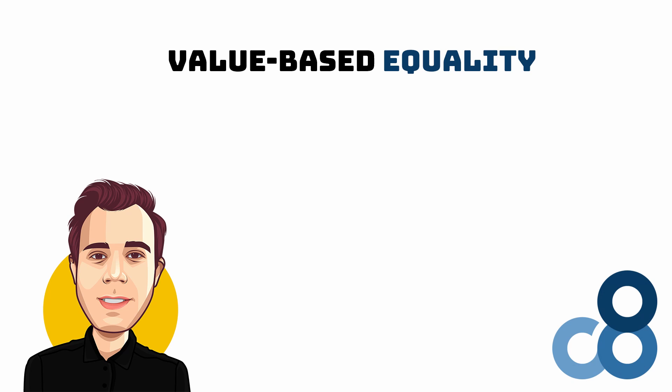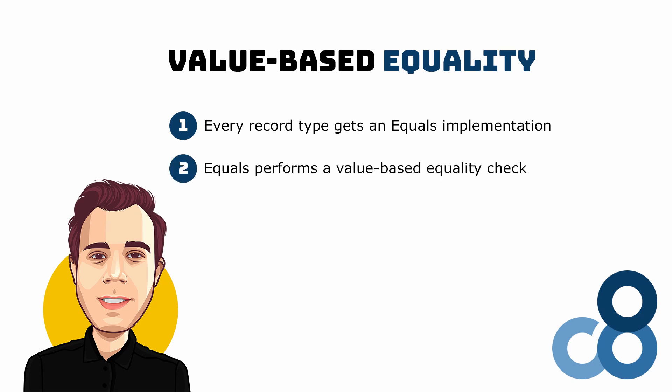During compilation, every record type gets an implementation of the equals method, which allows us to compare instances of record types. The implementation does value-based equality checks, meaning that if two instances of a record type have the same property values, they are treated as equal. If we have business logic that needs to compare different objects, record types can help make use of value-based equality without having to write the code yourself.